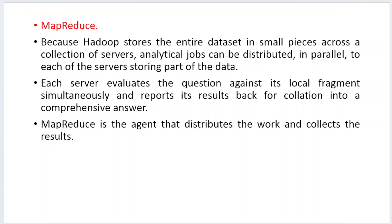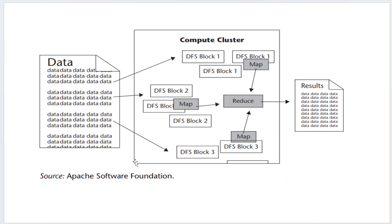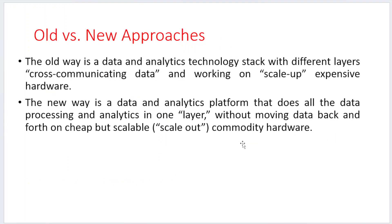Analytical jobs are distributed in parallel across a collection of servers. Each server stores part of the data and evaluates queries on local fragments to produce comprehensive answers. MapReduce is the agent that distributes the work and collects the results. In the diagrammatic representation, actual data is sent to different blocks, passed through the mapper function and divided into blocks, then sent to the reduce function, which returns the final results.